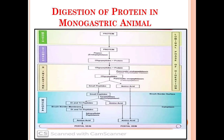As you all know, protein is composed of an amino acid chain. In the stomach, under the action of pepsin, which is an endopeptidase released from the chief cells of the stomach, the protein is divided into some amount of oligopeptides by breaking the peptide bonds within its molecule.